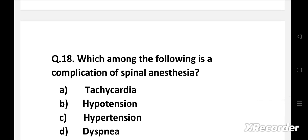Next question. Which among the following is a complication of spinal anesthesia? Option A: Tachycardia. B: Hypotension. C: Hypertension. D: Dyspnea.